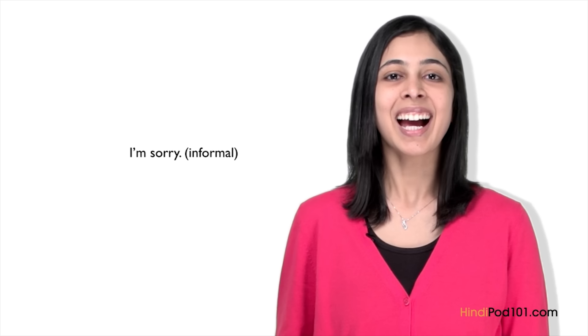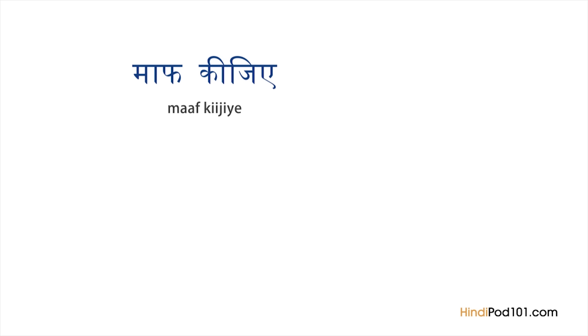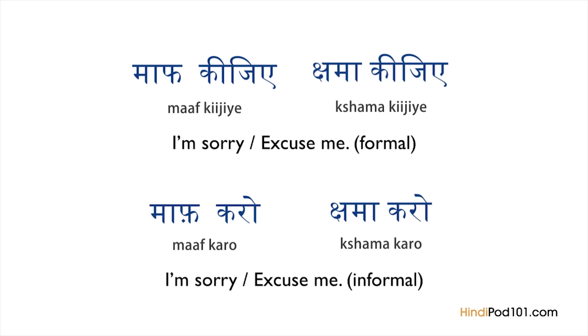The informal way to say I'm sorry is Maaf karo. Similarly, we could also say Shama karo. To review: Maaf kijiye or Shama kijiye is a formal I'm sorry or excuse me. Maaf karo or Shama karo is the informal I'm sorry or excuse me. These are all versatile phrases whether you're trying to get someone's attention, making your way through a crowded area, or apologizing for stepping on someone's foot.